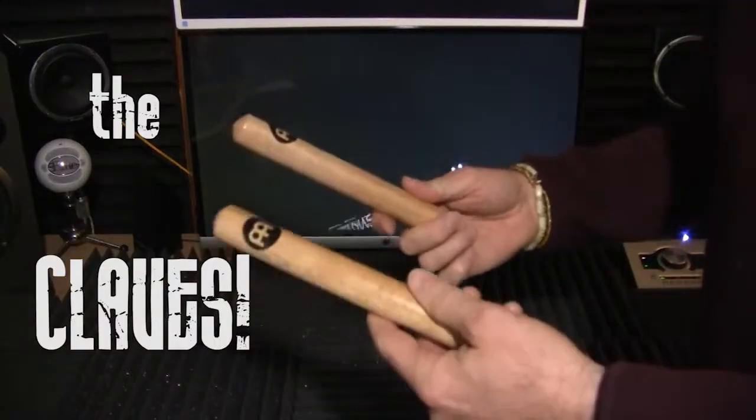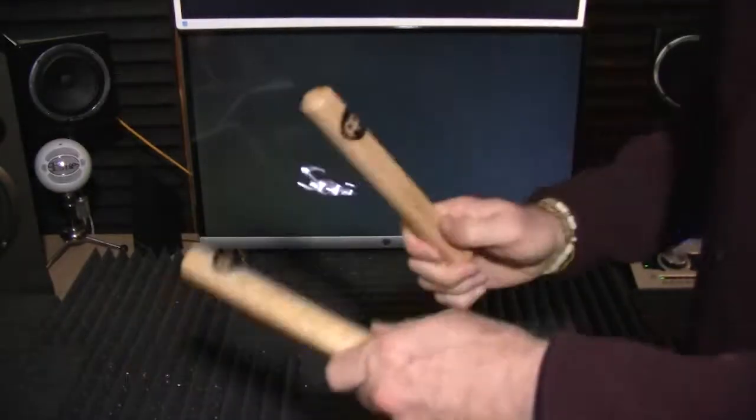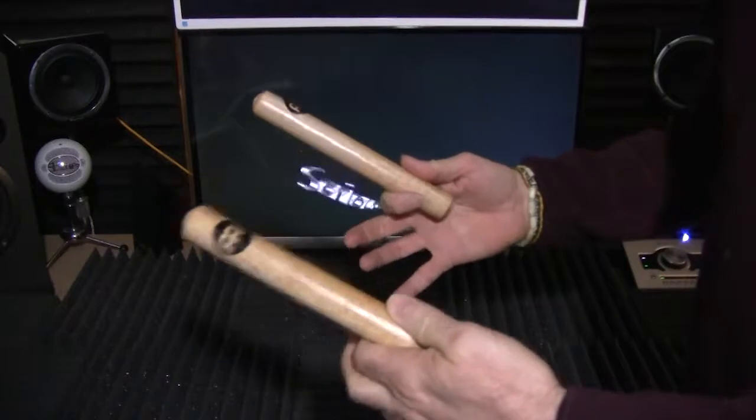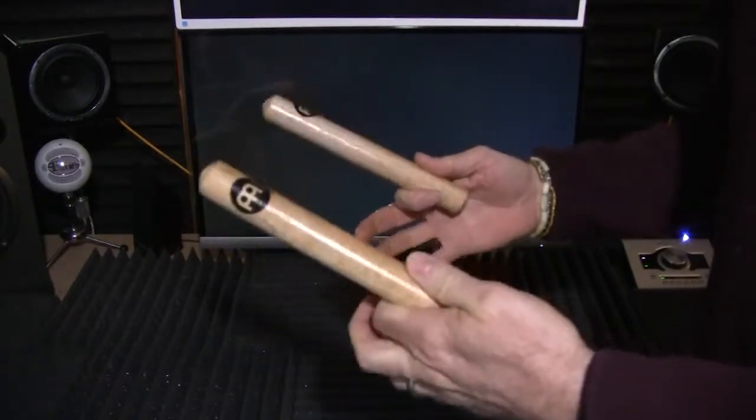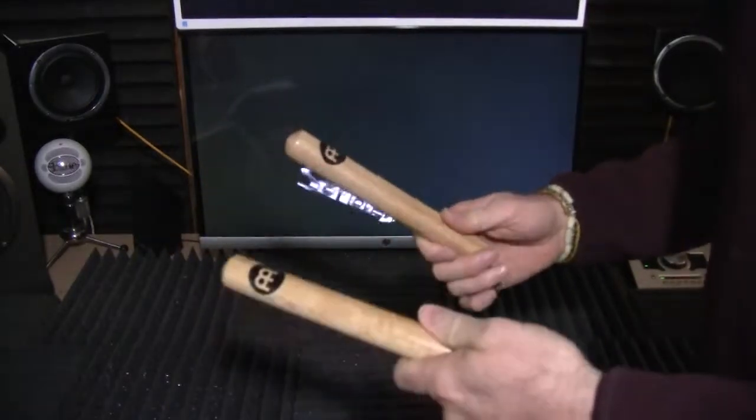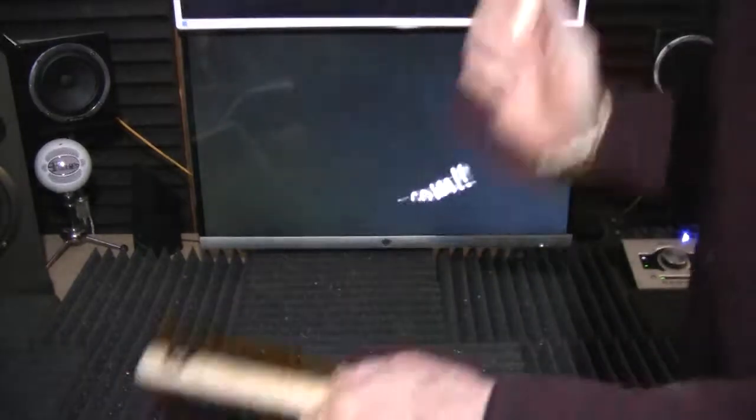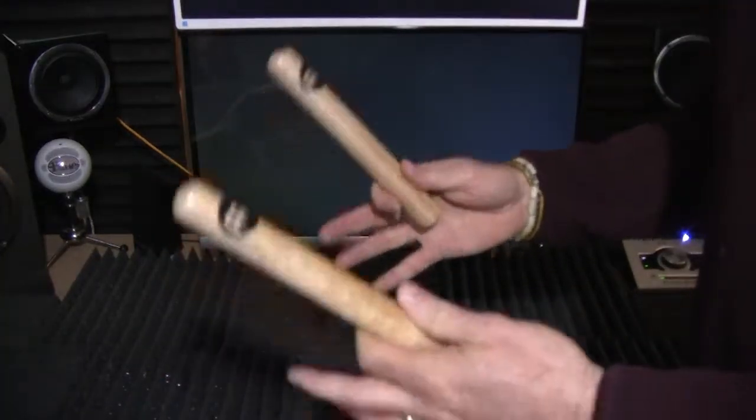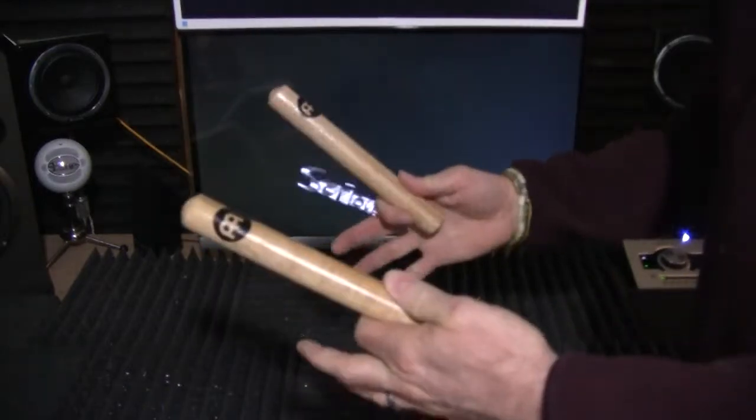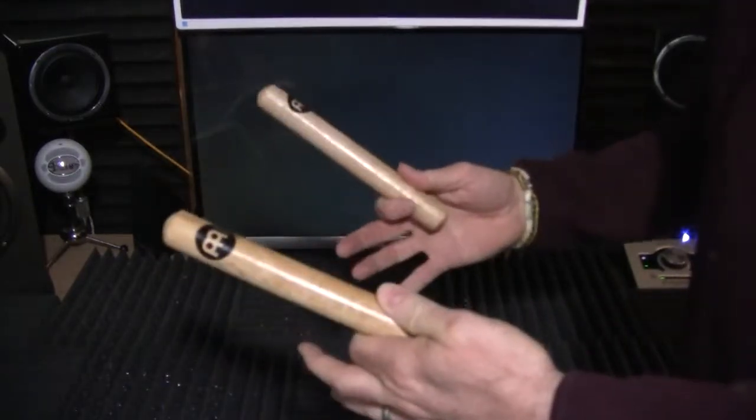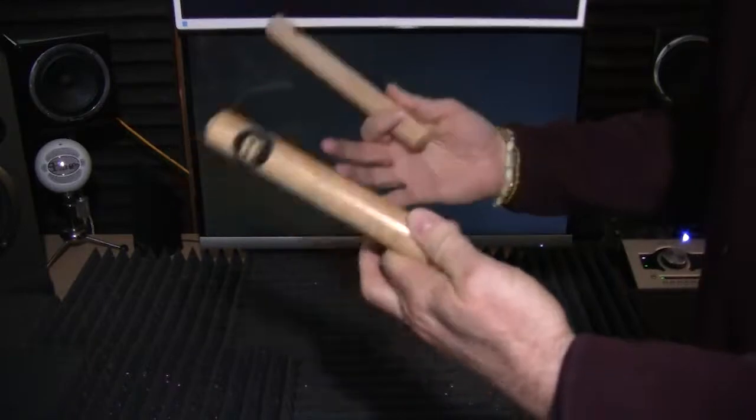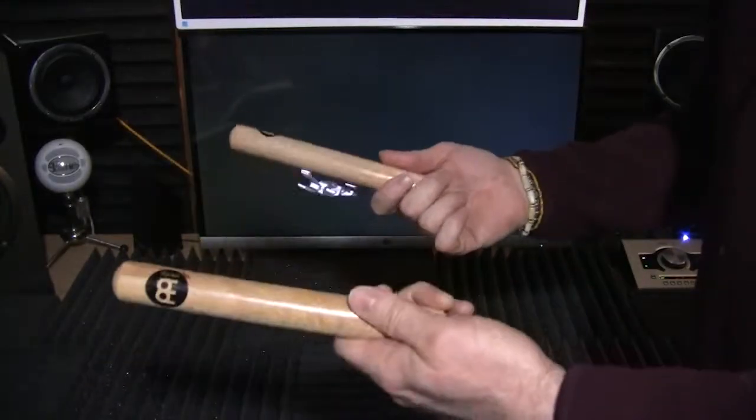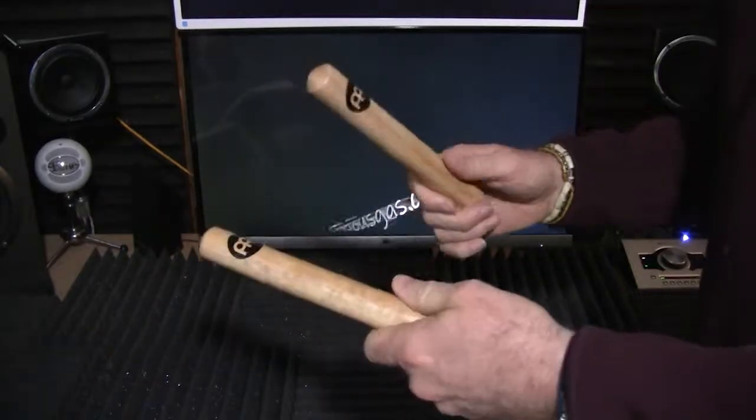Next up we got the claves and they have a sharp almost snare like sound. So if you've got music, maybe Latin music, where you don't have a drum kit but you want to emphasize two and four, that would certainly do it. Or maybe you want to emphasize and accent a certain consistent rhythm behind a lot of soloing instruments, especially soloing rhythmic instruments. This could do that for you. Merengue, Samba, Mambo, whatever you want to have.